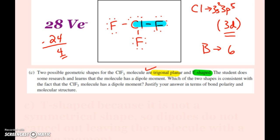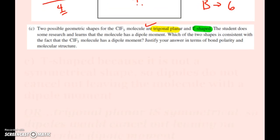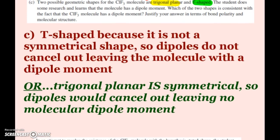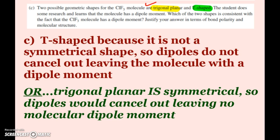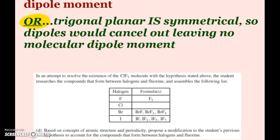I told you not to worry too much about seesaw and T-shaped and square planar because it involves SPD hybridizations. You should be familiar with trigonal planar, linear, bent, tetrahedral, pyramidal. You should recognize I've got three dipoles, they're all the same magnitude. The trigonal planar will allow those to cancel out. So you can say T-shaped because it's not symmetrical, the dipoles will not cancel out, leaving the dipole moment. Or you could say T-shaped because trigonal planar is symmetrical and the dipoles would cancel out. We're more familiar with and should be comfortable with the trigonal planar shape.